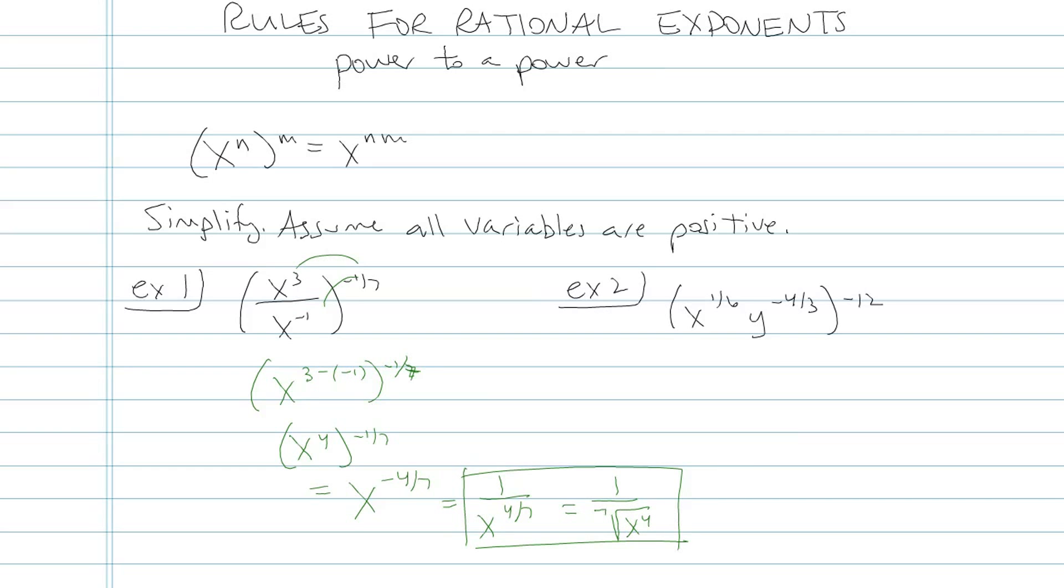Let's look at example two. There's no fraction for me to simplify, so I'm just going to go ahead and multiply those exponents. I'll have x to the one-sixth times negative twelve power times y to the negative four-thirds times twelve power. And then I just need to multiply those exponents.